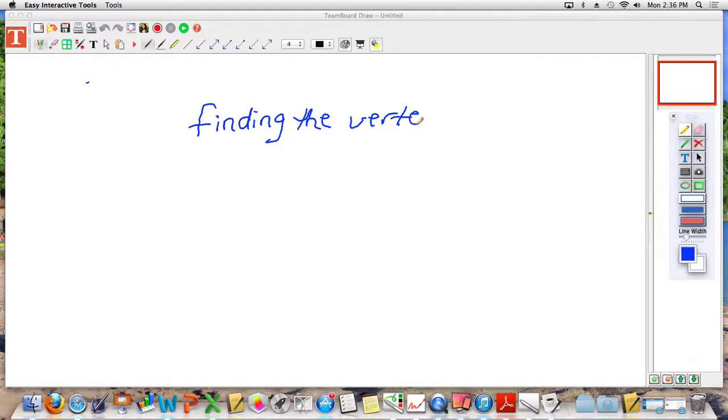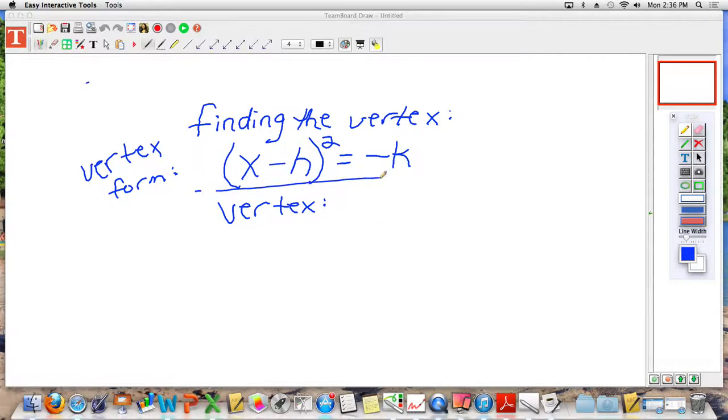The first thing that you need to do is make sure that you have it written in vertex form. And as we just talked about, vertex form means that you need to make it look like this: x minus h quantity squared is equal to negative k. And remember that your vertex is the opposite of how it shows up when you have it in vertex form.